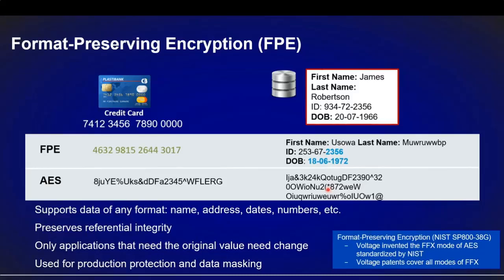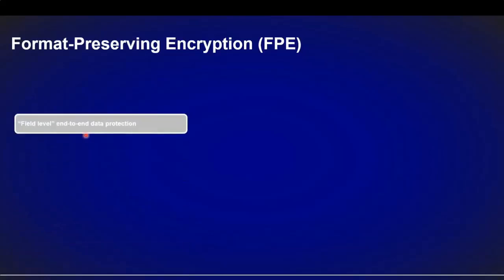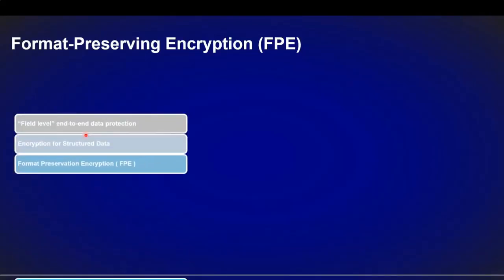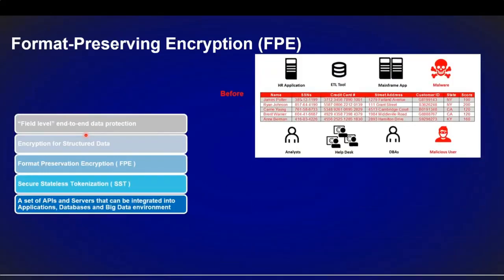Format preserving encryption solves all three problems. First, the size stays the same — no extra storage needed, no need to rewrite applications or change input buffers. Second and third, we can partially decrypt — for example, decrypt only the first four digits of a credit card to determine whether it's Mastercard or Visa, without decrypting the entire data. This is field-level end-to-end data protection.